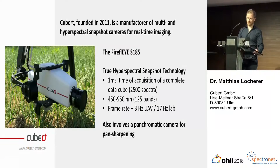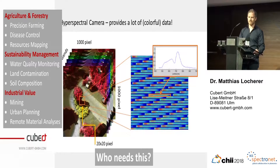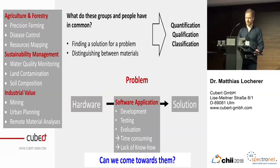The question we think about is: who's using hyperspectral cameras and what is the benefit? On the first point of view, hyperspectral cameras provide a lot of colorful, bright-looking, beautiful, sometimes fancy data. But this is not what we are aiming for in the end. There are several applications ranging from agriculture over sustainability management and also with high industrial value. If you look at all these different applications, what these groups have in common is that they all have a problem for which they need to find a solution. And the solution usually has to do with distinguishing between materials and different surfaces — it's all about quantification, qualification, and classification.